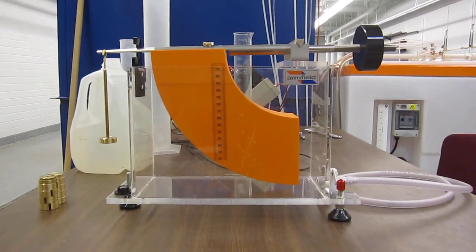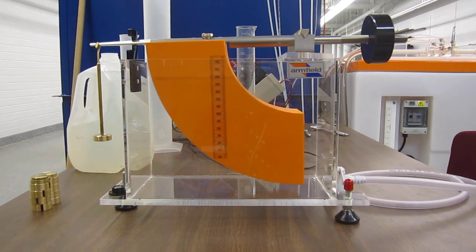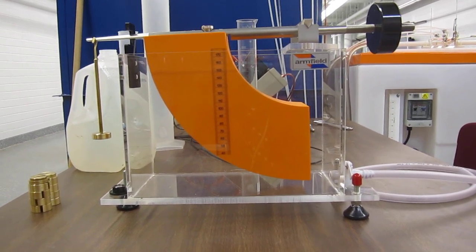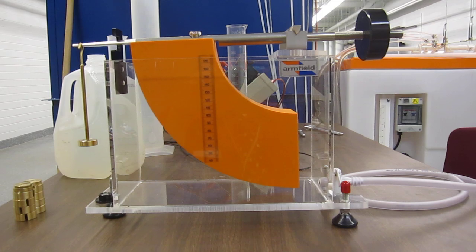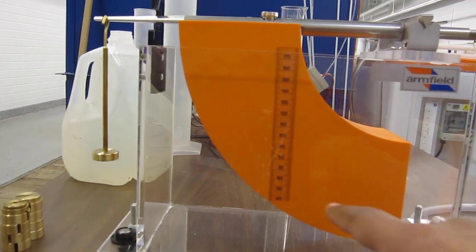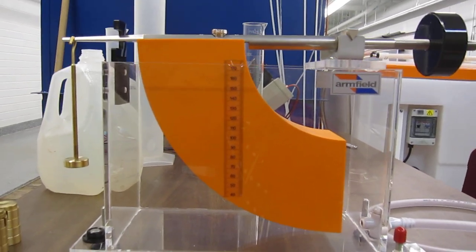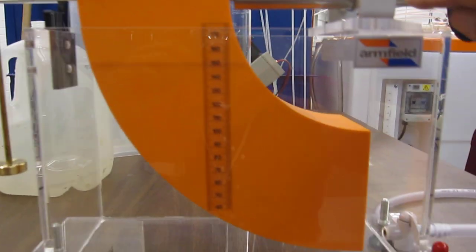This is the equipment used to verify the hydrostatic forces. This is the so-called hydrostatic pressures apparatus. It consists of this quadrant, yellow quadrant, which is hollow, attached to this arm, pivot about this point.